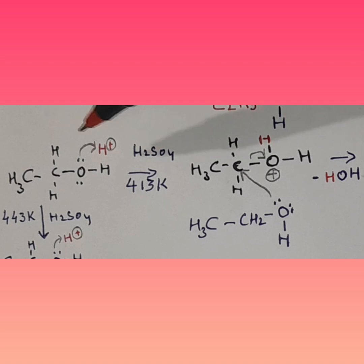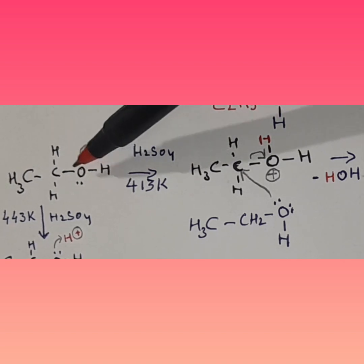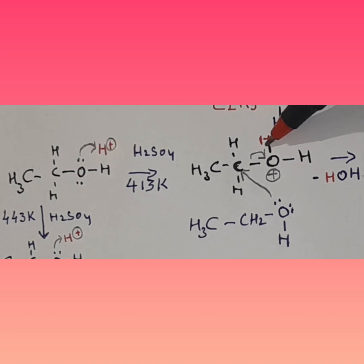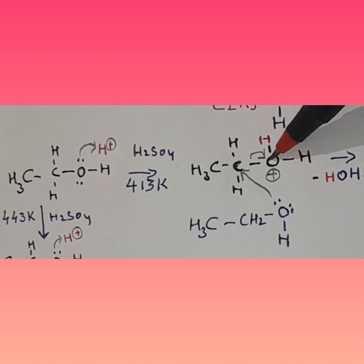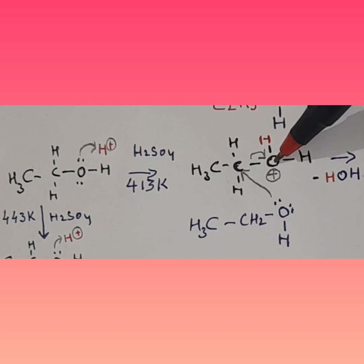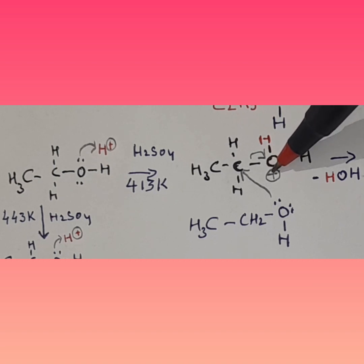Sulfuric acid provides a proton. Oxygen has two lone pairs, so it does a nucleophilic attack on the proton and forms O⁺H. This OH was already existing; this is the new bond formed. Because oxygen now has three bonds instead of the maximum two, it gets a positive charge.